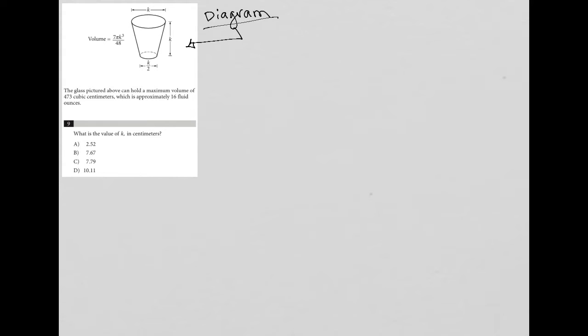looks like I have a height that is K, a diameter for the opening at the top that is also K, and a diameter for the base of the cup which is K divided by 2, or basically half of the diameter up top or half of the height of the cup.